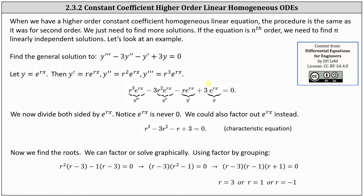And now we divide both sides by e to the power of rx. Notice e to the power of rx is never zero, and therefore we don't lose any solutions. We could also factor out e to the power of rx instead if we wanted to. The result is the following characteristic equation, which is r cubed minus three r squared minus r plus three equals zero. And now we need to find the roots, which we can do by factoring or solve graphically.